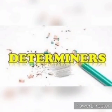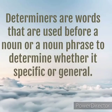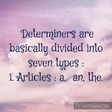Determiners are words that are used before a noun or a noun phrase to determine whether it is specific or general. Determiners are basically divided into seven types.